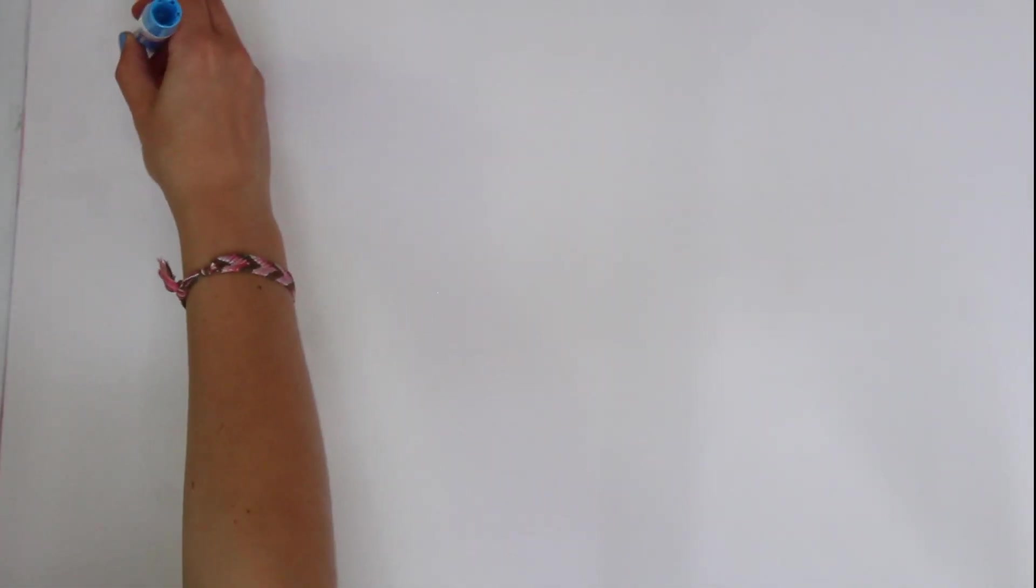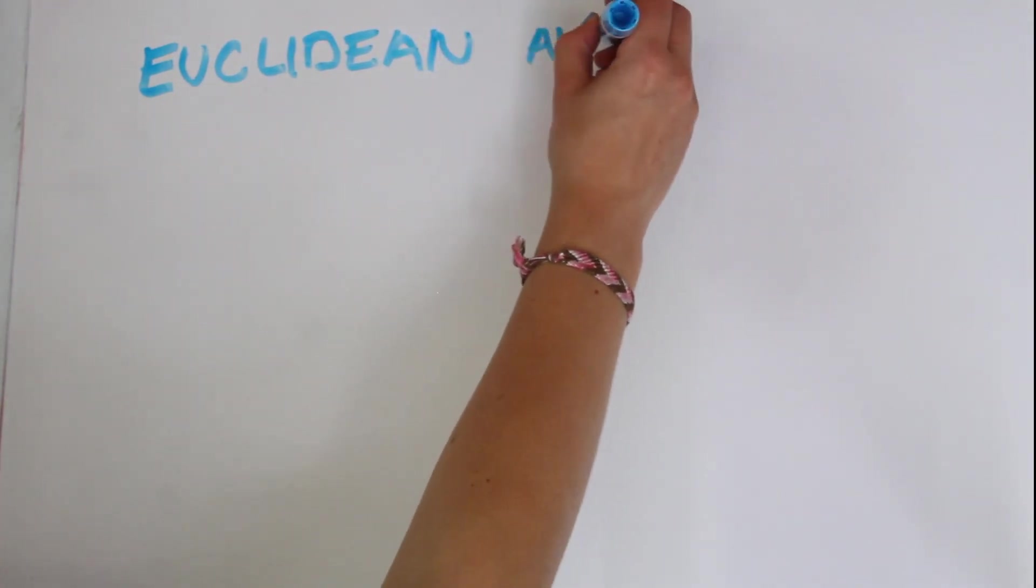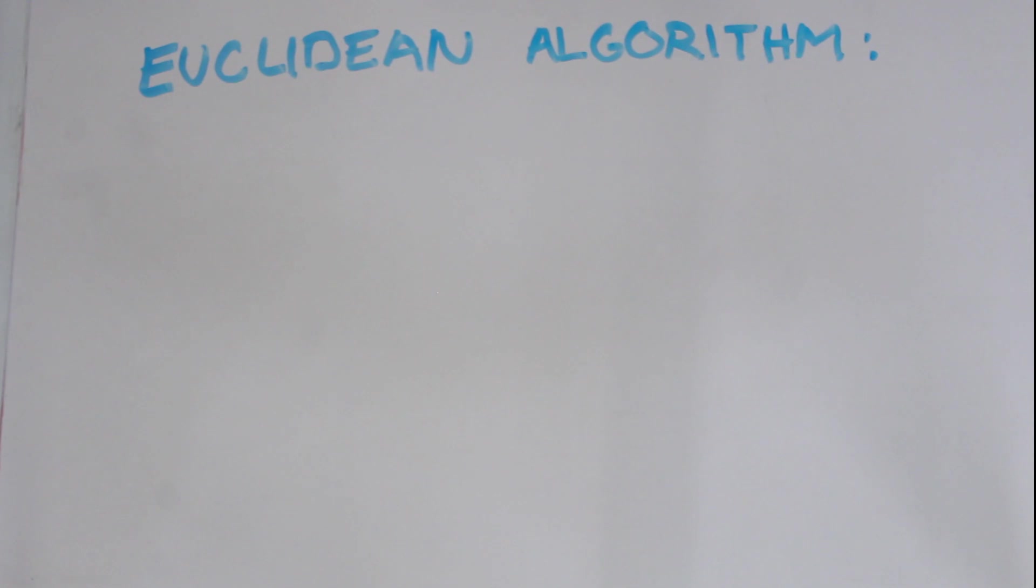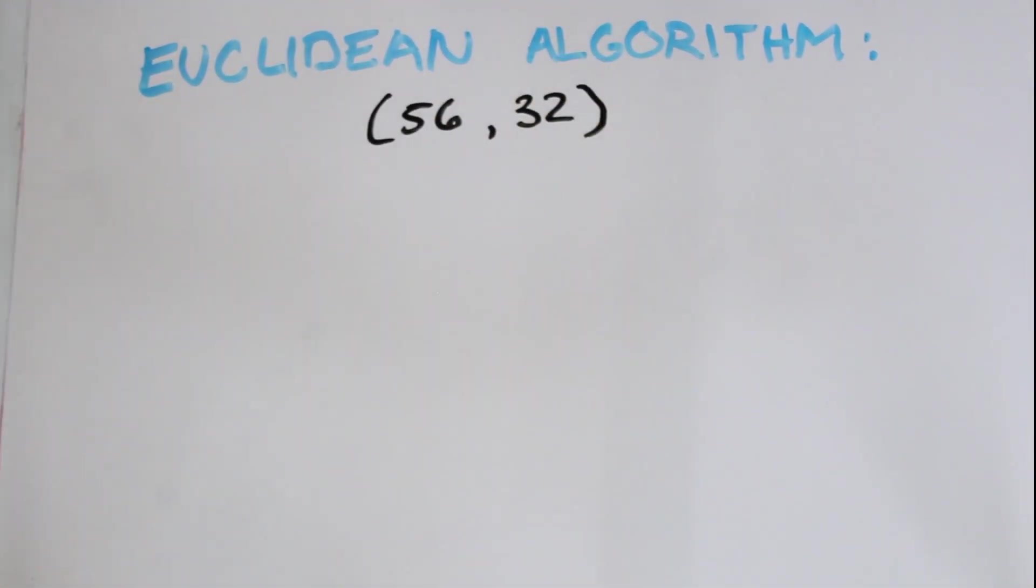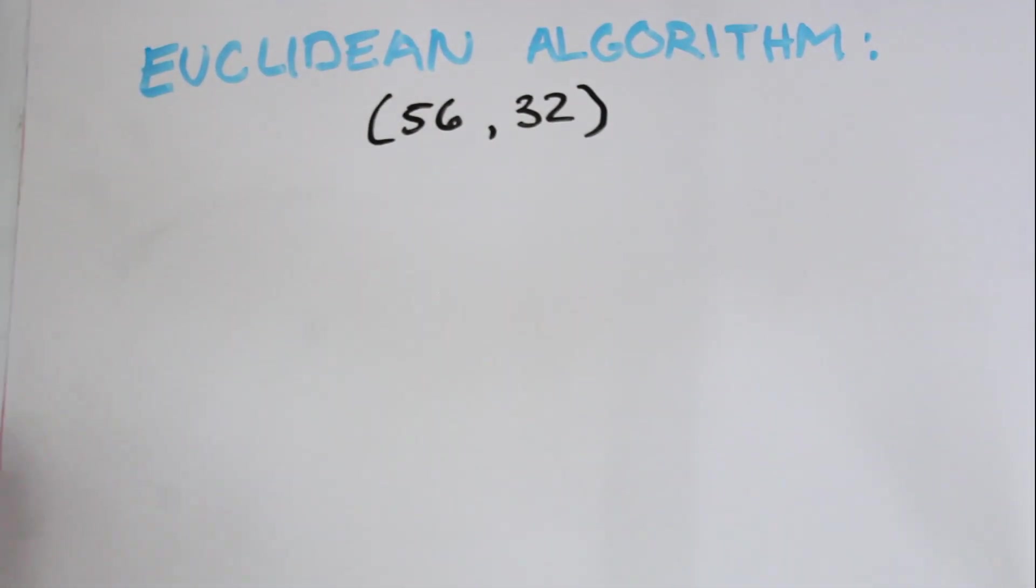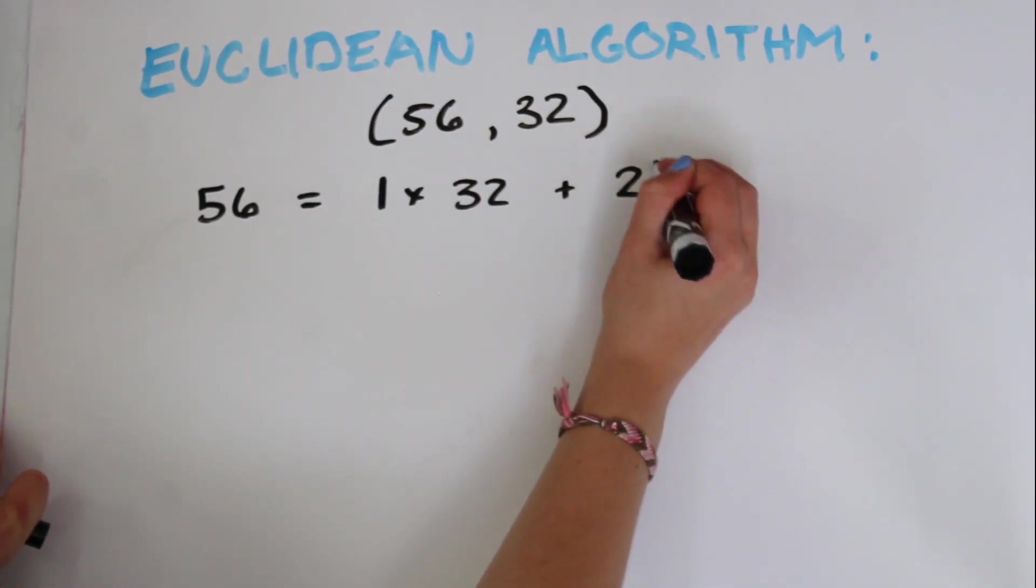So now we can finally use the Euclidean algorithm. It's going to be sort of like a chain of actions, based on the property that we just proved, and the fact that we can write any two numbers as A = BQ + R. So we can start by writing 56 = 1 × 32 + 24.